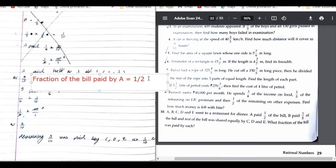After that, next statement. Fraction of the bill paid by B. How much has he paid? One-fifth. One-fifth of the bill. And rest of the bill was shared equally by C, D, and E. So that means rest of the bill.